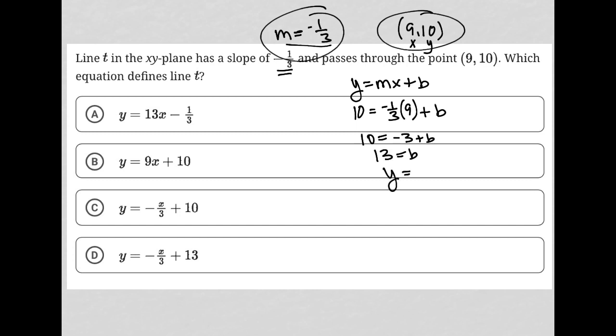And therefore, my equation is Y equals negative one-third X plus 13. And there it is. Found it. So this is my equation, and it matches up with this.